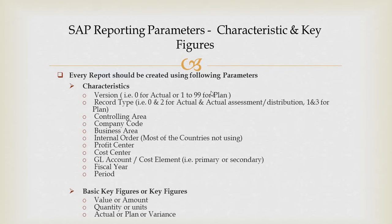These are the SAP characteristics and key figures we may need to use while creating a report. Without these characteristics you cannot create a report — some are mandatory characteristics and some are reporting parameters you need for doing reporting. You can use these characteristics either in rows or in columns, depending on how you need them for the reporting.